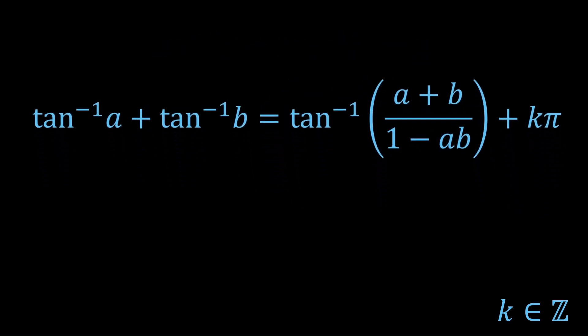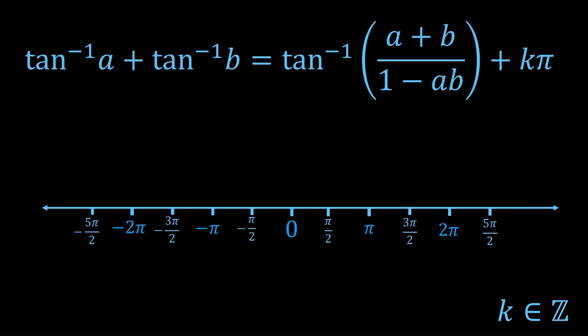But we can actually go a bit further. We can find which values of k are possible. Let's look at the left hand side. Tan inverse a and tan inverse b are both in minus π on 2 to π on 2. So when you add them together, the result is in minus π to π.